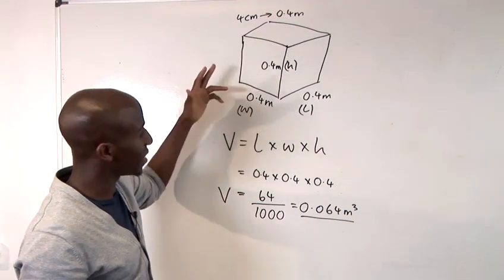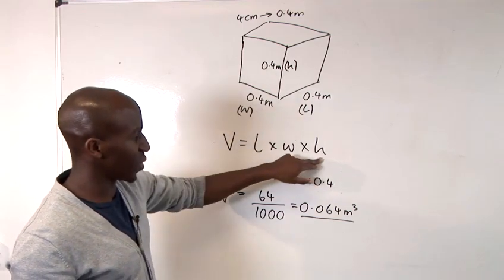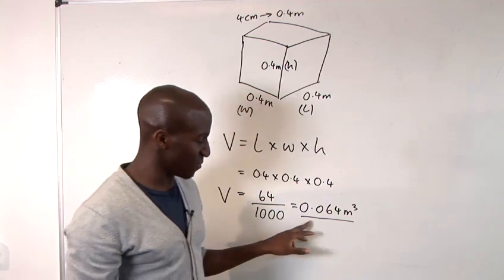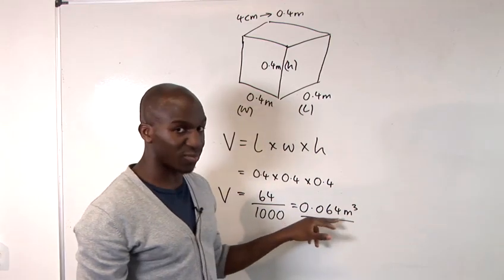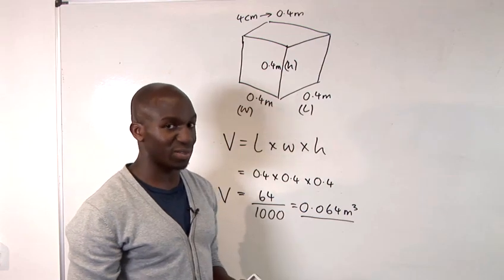Afterwards, I inserted all of these values into the equation here and then just multiplied them together. And then this gave me a value of 0.064 cubic metres. And that's basically how to calculate cubic metres.